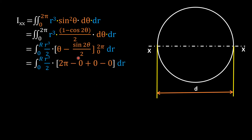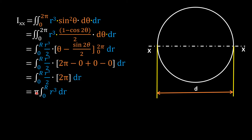At θ = 2π: θ = 2π and sin 4π = 0. At θ = 0: θ = 0 and sin 0 = 0. So we are left with 2π. The 2 from 2π cancels with the 2 in the denominator, giving π × integral of r³ dr from 0 to R. Integral of r³ = R⁴/4. Finally, I_XX = πR⁴/4.